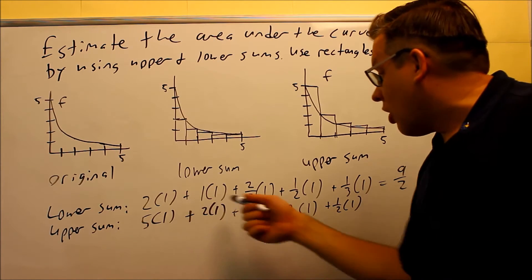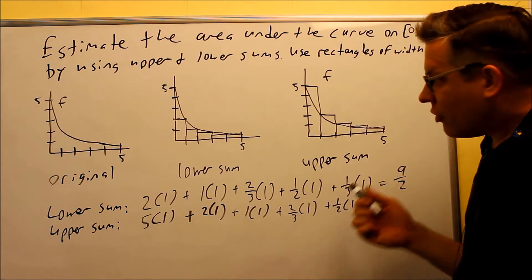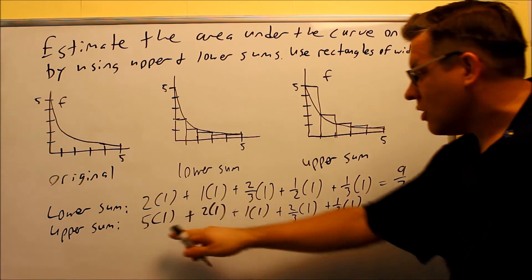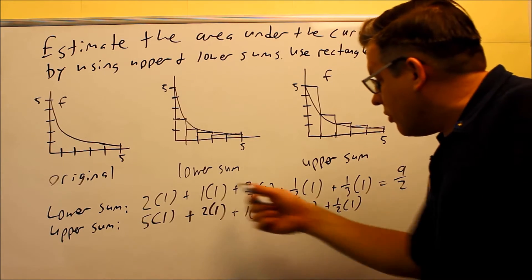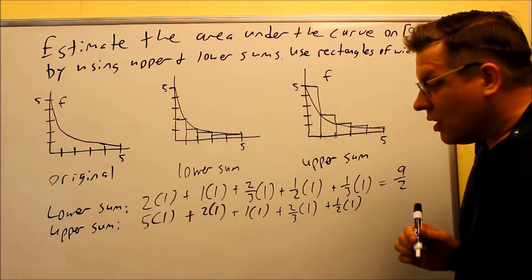So again, you should always have 5 rectangles for each one. We did 5 for that, we have 5 rectangles for this. So you have 5 calculations here, so you know that you did the correct number.